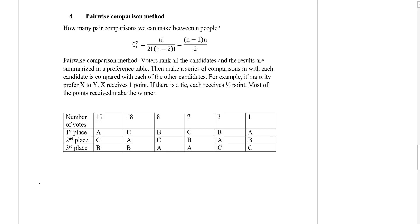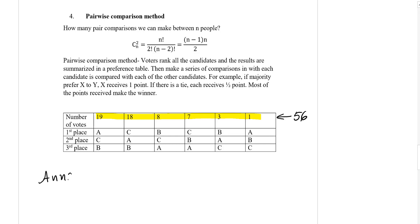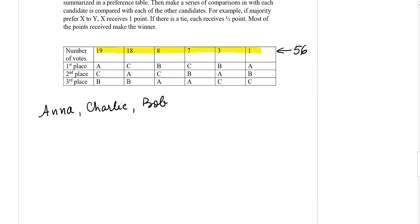Looking at the table, we have the total number of votes — found by adding all the numbers — which in this case is 56. The candidates are Anna, Charlie, and Bob. So let's start comparing them.